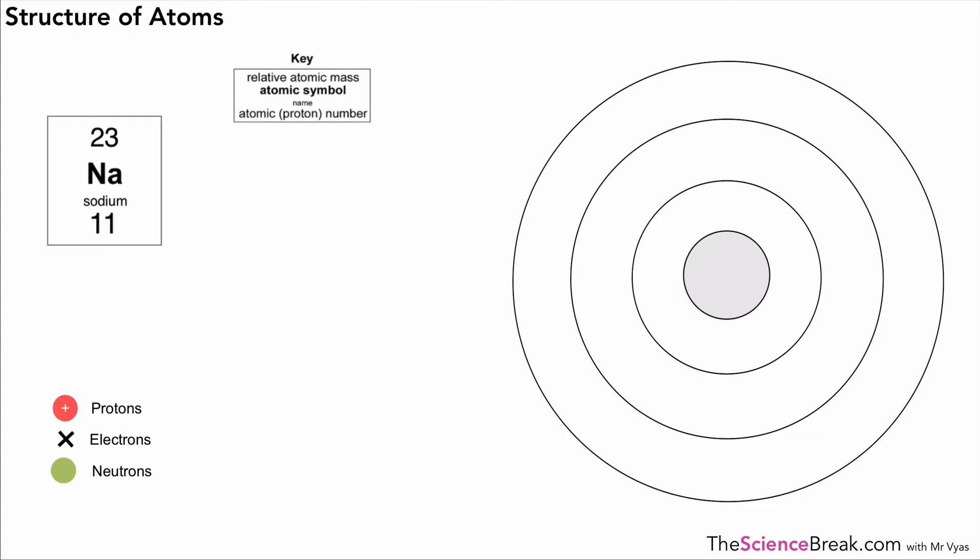Once we know that information, how do we go about drawing the atom? We need to remember where the different parts are, and once we know that, we can work out the number of each of these subatomic particles—protons, electrons, and neutrons—and add them to our diagram. I always use this diagram here: PEN—easy to remember—and then we can fill in the numbers. Remember, the bottom number is the proton number, so that's very easy—just copy that out: 11.